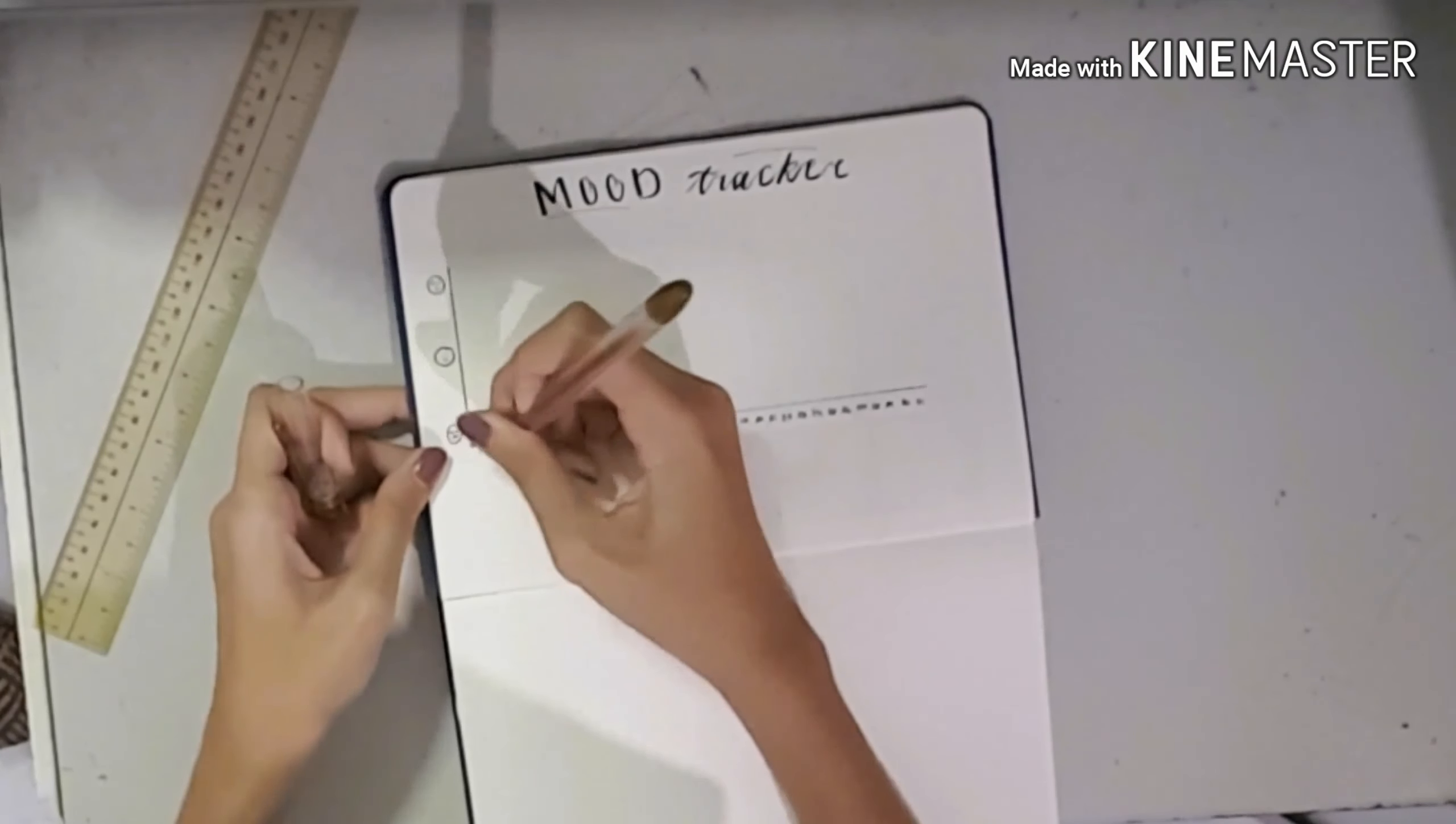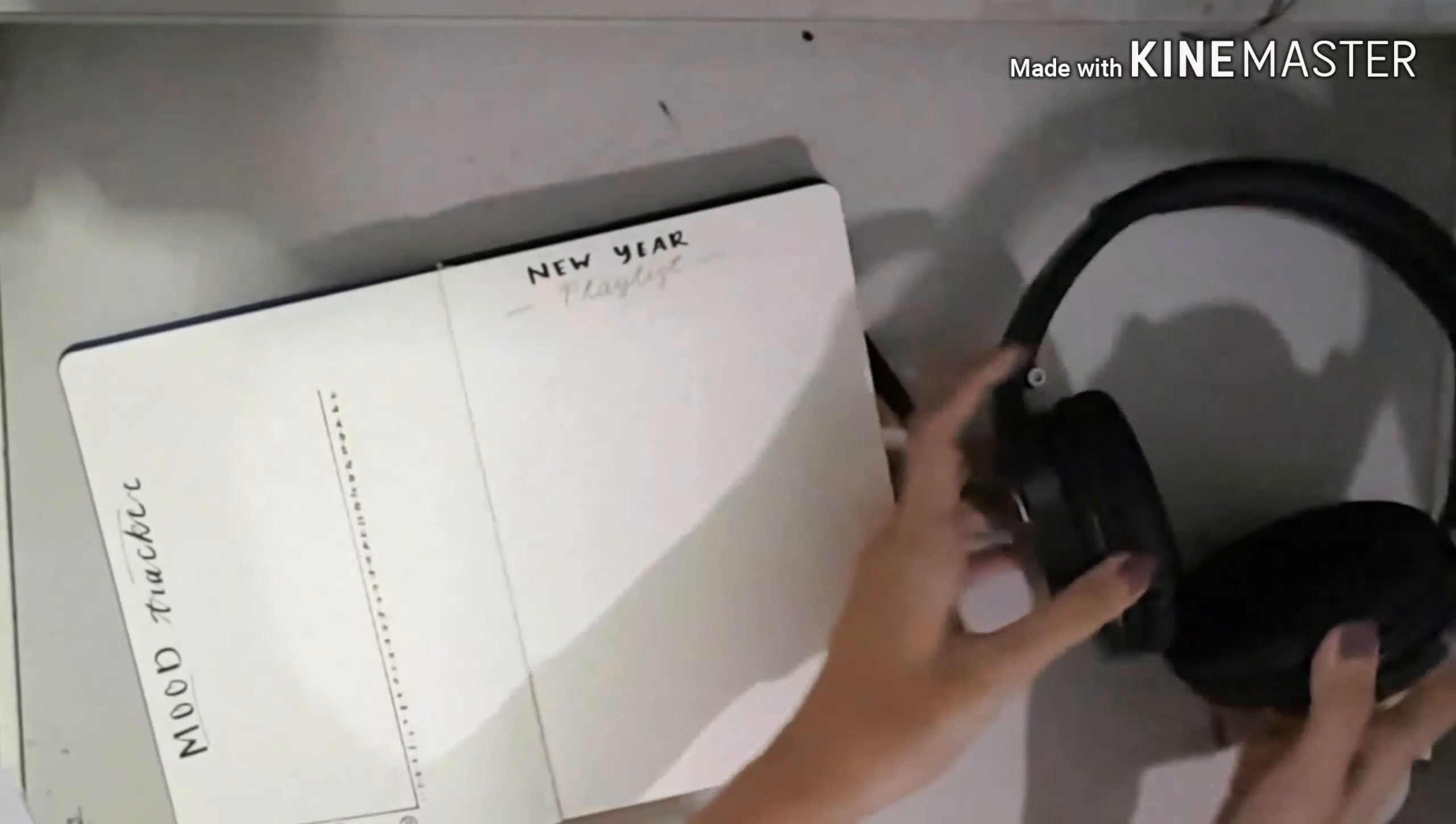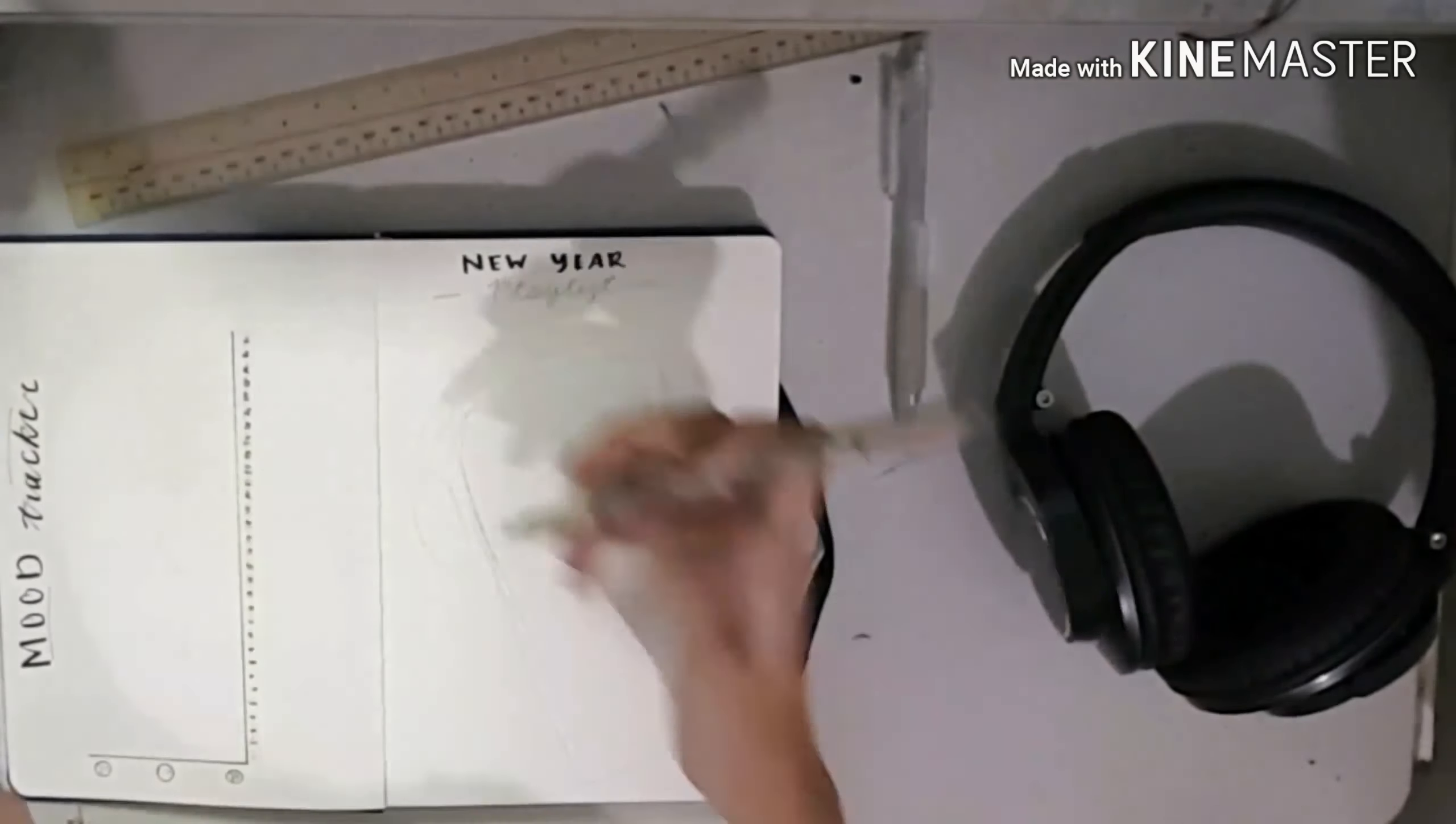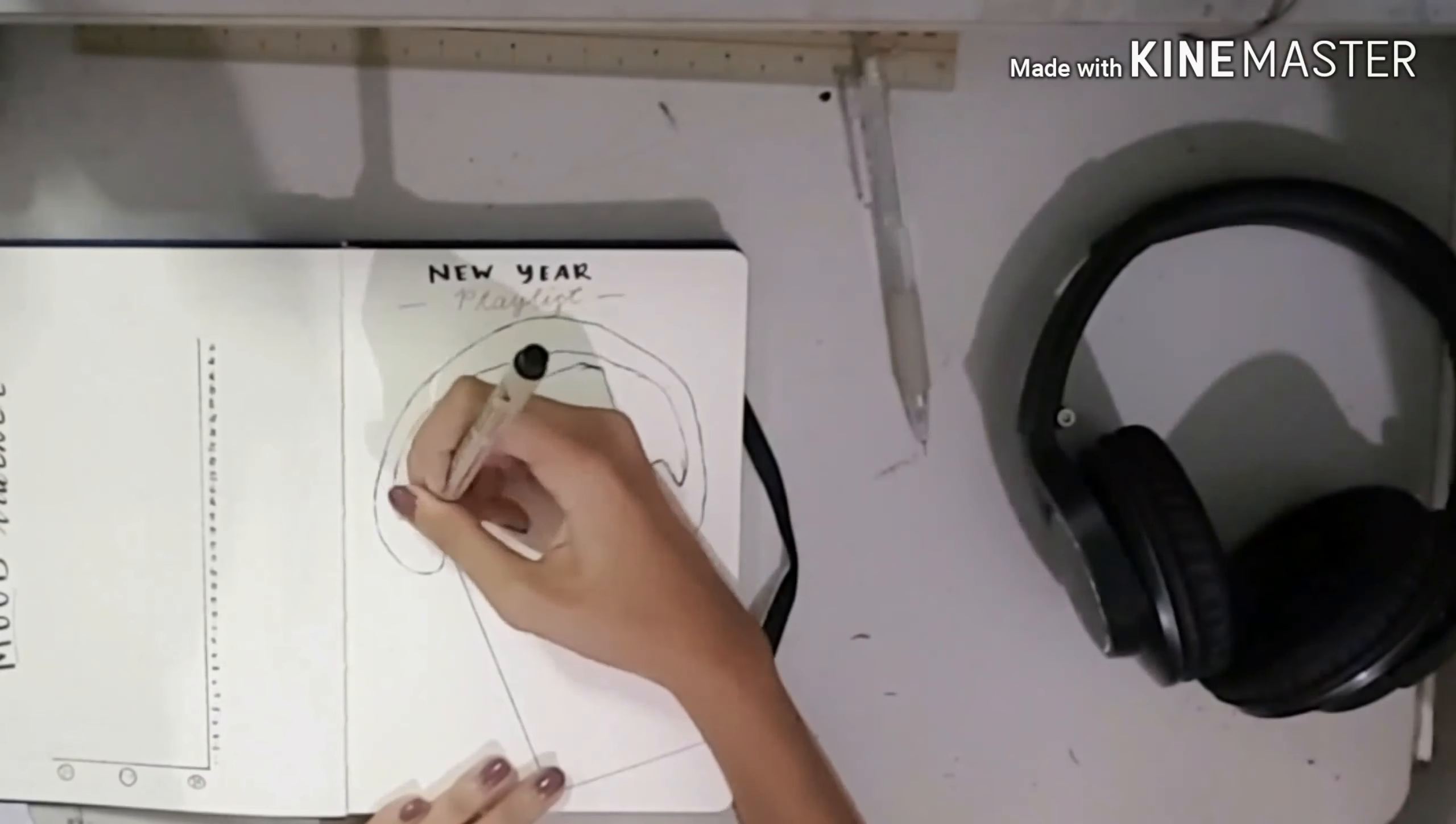Next to that is a New Year playlist. I saw Amanda Rachley do this and I'm kind of inspired. I thought it was a fun way to add some personal aspects to your bullet journal. I drew headphones and a phone because I love having a minimalistic design, and one of my favorite items I received this Christmas is a pair of headphones.